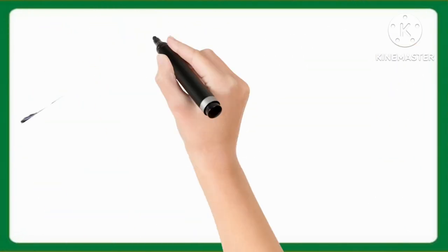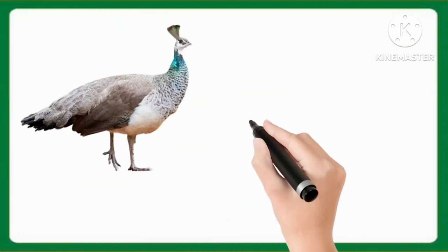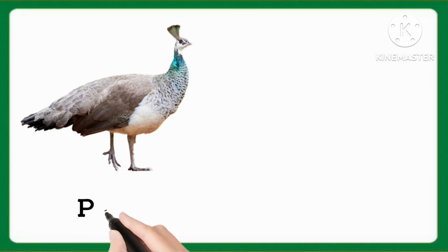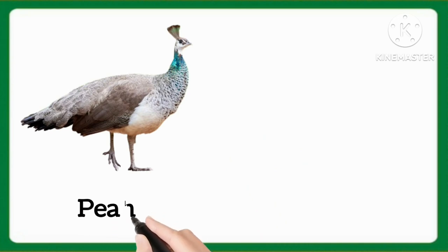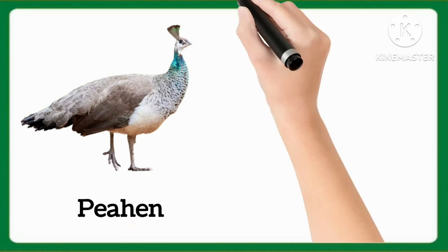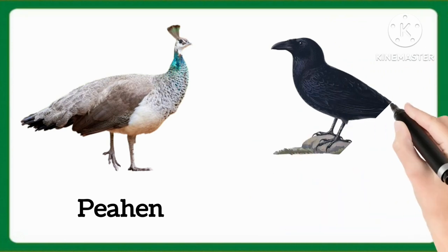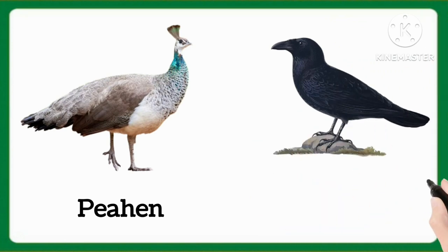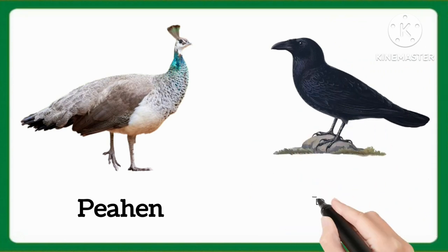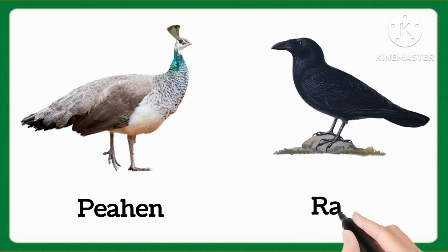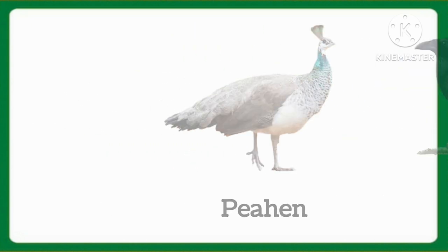And now tell me which word is this, kids? This is peahen. Peahen. And which word is this, kids? This is raven. Raven.